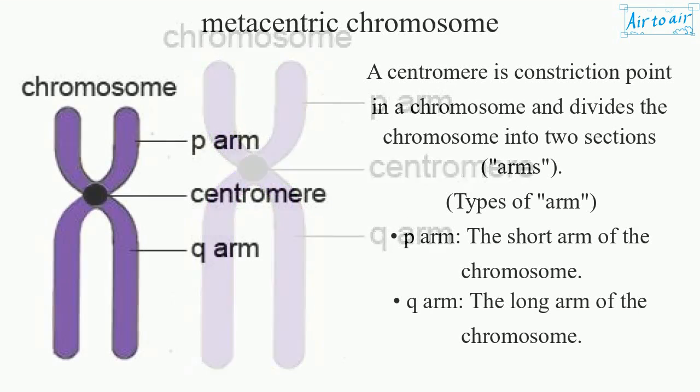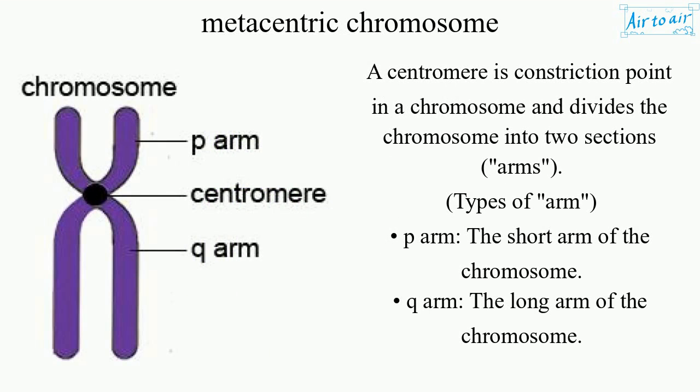A centromere is a constriction point in a chromosome and divides the chromosome into two sections. Arms types: P-arm — the short arm of the chromosome; Q-arm — the long arm of the chromosome.